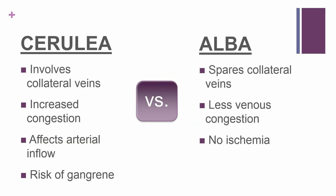Phlegmasia cerulea dolens involves the whole DVT system plus the superficial and the collateral veins. This causes an issue because it has no venous outflow and then starts to affect the arterial inflow, and that can lead to ischemia and gangrene — there's a big risk on that one. If you're comparing cerulea directly to alba dolens, remember that cerulea involves the collateral veins. If you want to try to remember that, they both start with C.